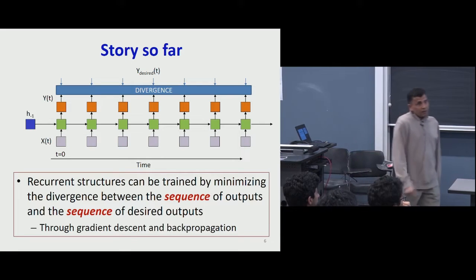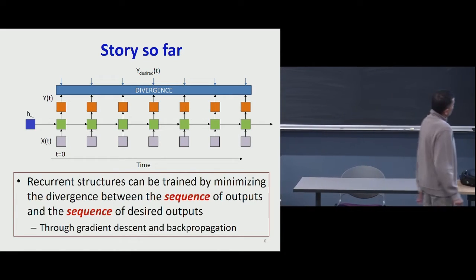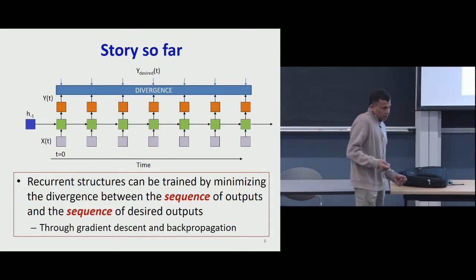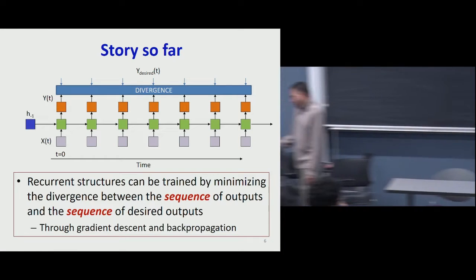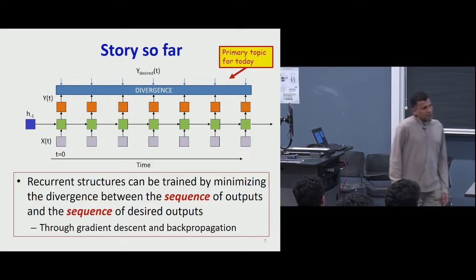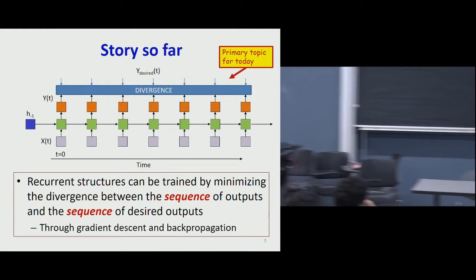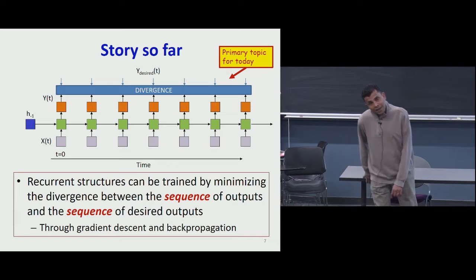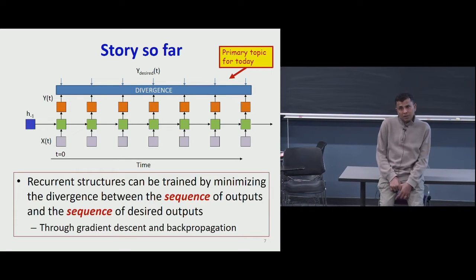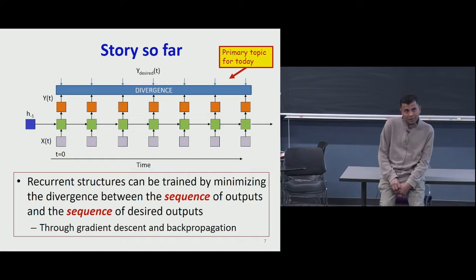We'll keep this binary addition problem in memory because we'll return to it briefly in a different context. We also saw how recurrent structures could be trained — by minimizing the divergence between the sequence of outputs the network produced and the sequence of target outputs, using gradient descent and back propagation. The real issue was in defining the divergence. The divergence is no longer just a sum of divergences for individual outputs; it's a divergence between a sequence of outputs and a sequence of desired outputs.